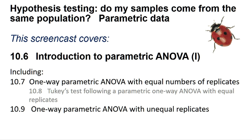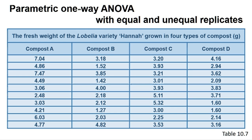This test asks if three or more independent data samples can be considered to be from a common statistical population. A significant result indicates that this is unlikely and that there are significant differences between two or more of the samples. For example, Table 10.7 gives the fresh weight of the Lobelia variety HANA, grown in one of four types of compost, eight weeks post weaning from a tissue culture environment. The question is whether any of the compost promotes superior growth of the plants.